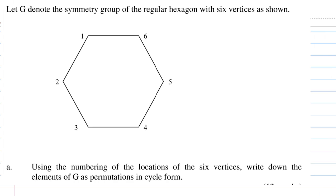Hi, for this recording I'm going to show you how to find the symmetry group of a regular hexagon. In this case we are given a regular hexagon with six vertices labeled 1, 2, 3, 4, 5, 6. We're going to write down the permutation group of this regular hexagon in cycle form. Let's call this G.